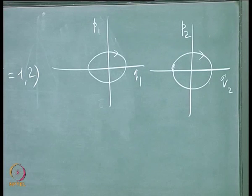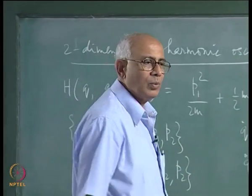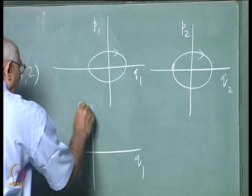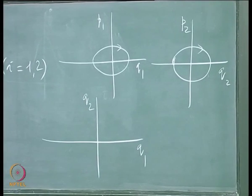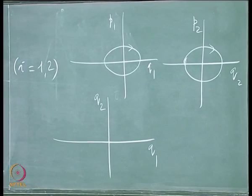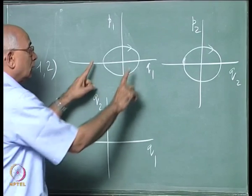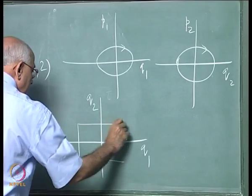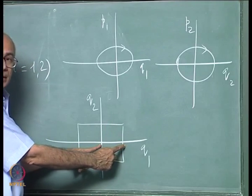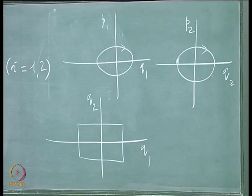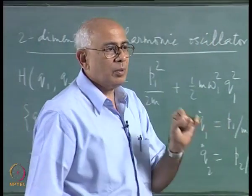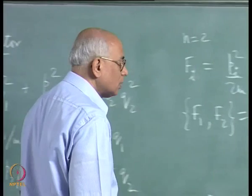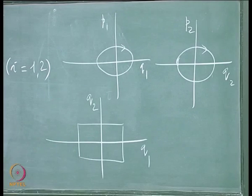What would you get if you project a trajectory onto the q1, q2 plane? It is evident that q1 stays within one range and q2 within another, so motion is restricted to some kind of rectangle — this being the amplitude of the first oscillator and that of the second. But is the representative point going to trace a closed curve or an open curve?